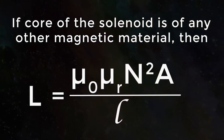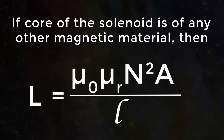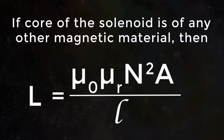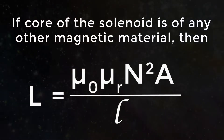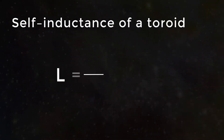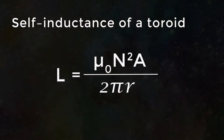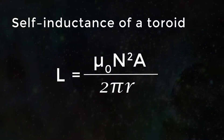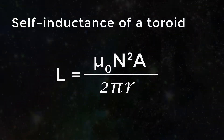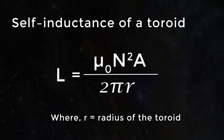If the core of the solenoid is made of any other magnetic material, then L = μ₀ μᵣ n² A / ℓ. The self-inductance of a toroid is L = μ₀ n² A / (2πr), where r is the radius of the toroid.